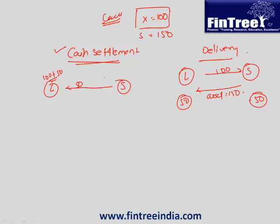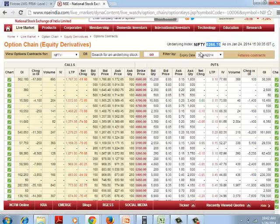How much was the profit to the long? 50. So what short said is: I am not going to deliver the asset; it's a cash settlement. Let me pay you 50. If you want to buy the asset, you have your own 100 rupees, take my 50 and go and buy in the market. Instead of delivery, the settlement is done in cash. So when the underlying asset is an index, delivery is not possible and therefore the only possible settlement is a cash settlement.